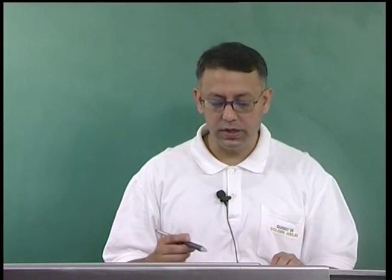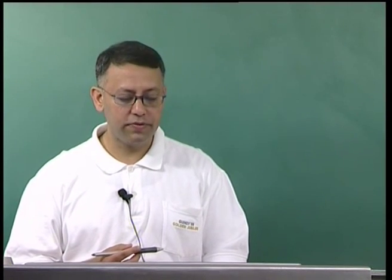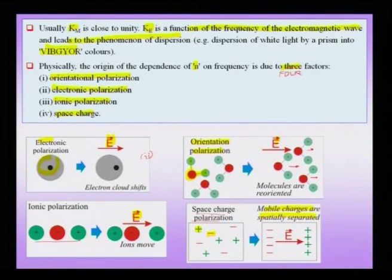The velocity of light in a denser optical medium is smaller than in a rarer medium like air or vacuum, implying a quantity called the refractive index — the ratio of velocities. This refractive index has a frequency dependence, giving rise to the familiar phenomenon of dispersion, where white light is spread by a prism into its VIBGYOR component colors. The mechanisms underlying this frequency dependence are orientation, electronic, ionic, and space charge polarization.